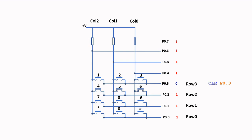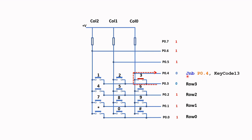To scan Row 3, we use CLR P0.3, which sets P0.3 to a logic 0. Now assume that we have pressed key number 3. We then have a complete circuit connected to P0.4, which sets P0.4 to zero. We can use the JNB instruction to test for a zero — if it's zero at P0.4, it will call the subroutine to display the key, in this case 3, on the 7-segment display.